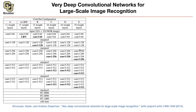If you have two 3x3 convolutions stacked on top of each other in your layers, that's equivalent to a 5x5 convolution — the receptive field is going to be 5x5. So rather than working with 5x5 or 7x7 convolutions, you stick to 3x3 convolutions and stack them on top of each other, going deeper.